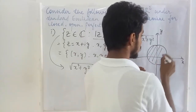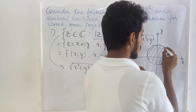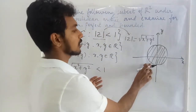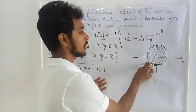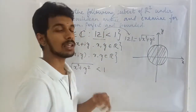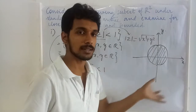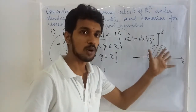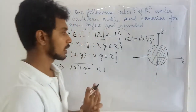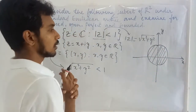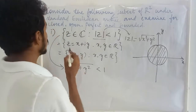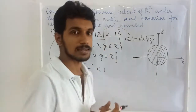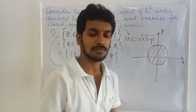Let us draw a circle for that. Here, we are considering only the interior points of this circle. We are not going to the exterior points or the points on the boundary — we just consider only the interior points. Now, in order to check whether this is open and closed, first let us see what the neighborhood in R² under the standard Euclidean metric is.